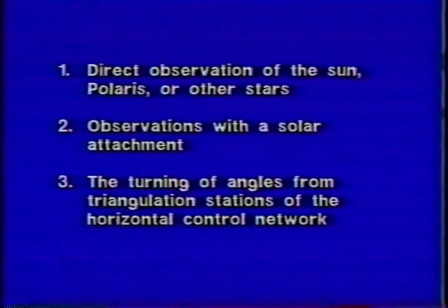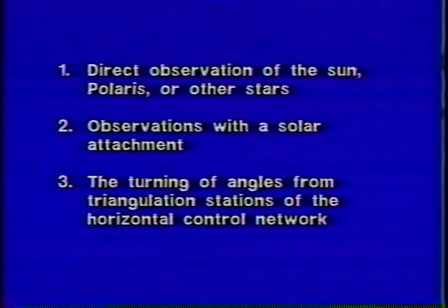For the direction of lines, the 1973 manual at Section 217 states that the direction of each line of the public land surveys is determined with reference to the true meridian as defined by the axis of the earth's rotation. Section 219 further states that current practice is to determine true azimuth by direct observation of the sun, Polaris, or other stars; observations with a solar attachment; or the turning of angles from triangulation stations of the horizontal control network.